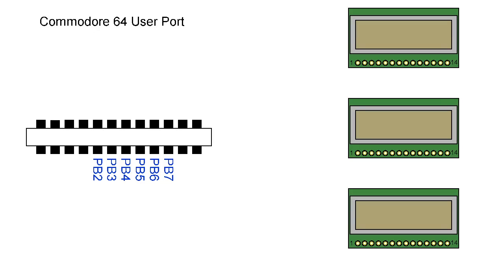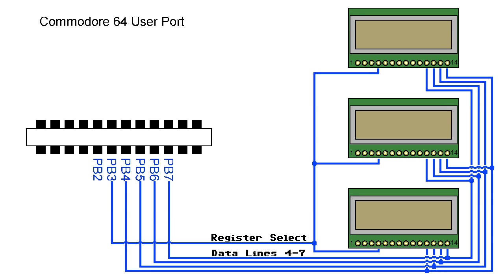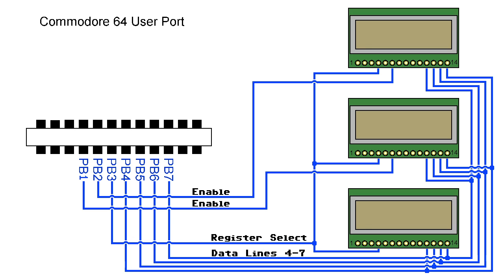By the way, in theory it should be possible to connect up to three screens to the user port. All three screens would share the same four data lines and the register select. However, PB2 enable would go to one screen, PB1 to the next, and PB0 to the third — so each screen has its own enable line. Every screen will completely ignore whatever is on the data bus until its specific enable line is raised high.